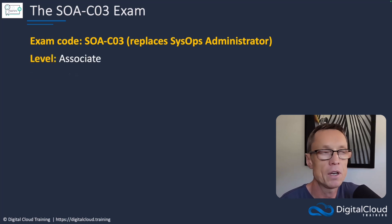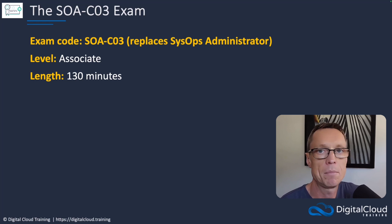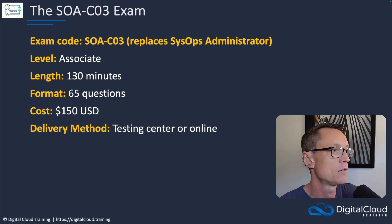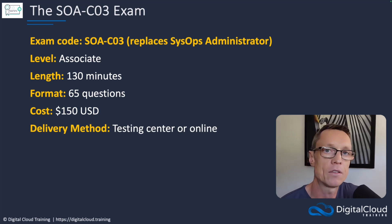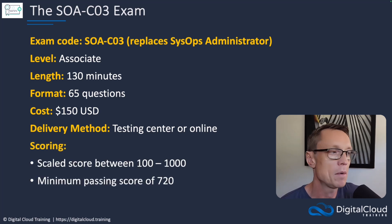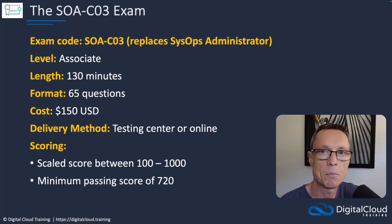The level is Associate, and it's 130 minutes long — 2 hours 10 minutes — no changes there. 65 questions, no changes there. $150, which is the normal price for an Associate level certification. You can take it in a testing centre or online. From a scoring perspective, it's the same as other Associates with a passing score of 720 points out of a potential 1000.